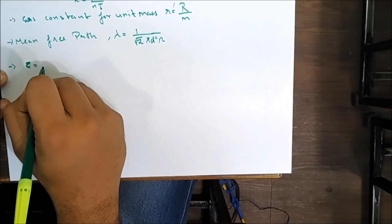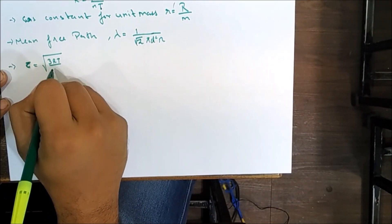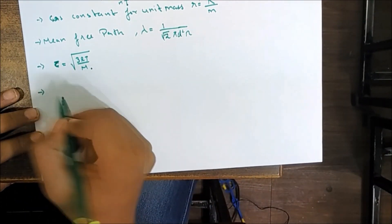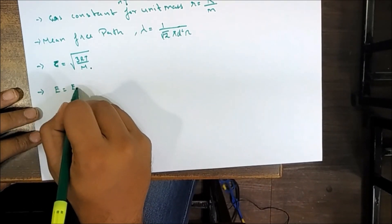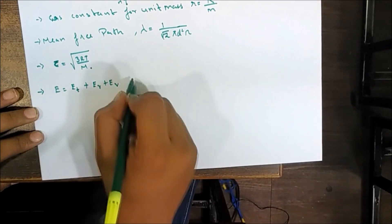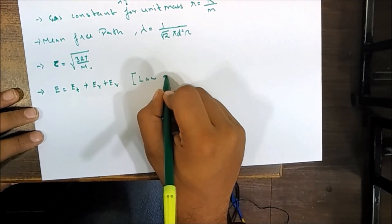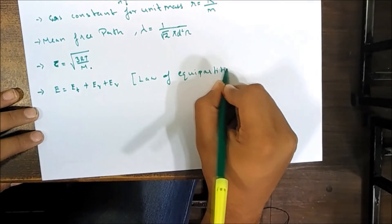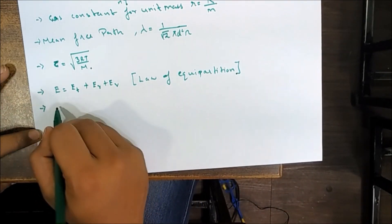Mean velocity c̄ = √(3RT/M). Total energy E = translational + rotational + vibrational energy — the total energy stored in a gas molecule — and this represents the law of equipartition of energy.